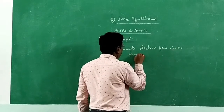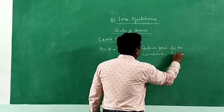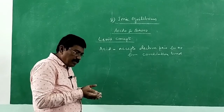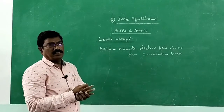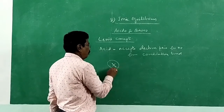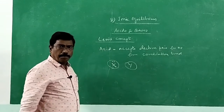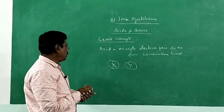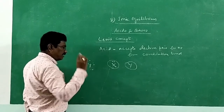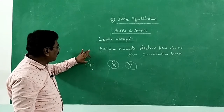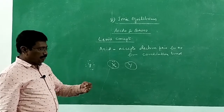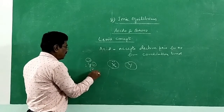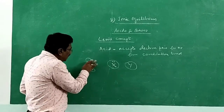This electron pair donation is for the formation of a coordination bond — I can say coordinate covalent bond. So, acid accepts an electron pair from some other substance for the formation of a coordination bond. Base gives an electron pair to the acid for the formation of a coordination bond. If a molecule has excess electron pair and another has a deficit of electrons — meaning it doesn't have an octet structure — it will readily accept an electron pair.